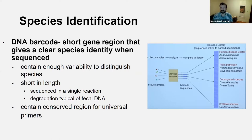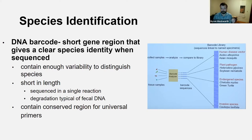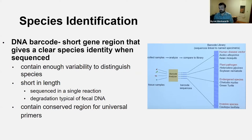Species ID — covered briefly before — is essentially DNA barcoding, where very short gene regions are used to identify species. There are global initiatives for standardized protocols for DNA barcoding methodology to describe the world's biodiversity, and we're borrowing from those approaches for our non-invasive collections. The key is that there's enough variability within the sequence to distinguish between species, but it's also typically short in length — one PCR run — because fecal DNA is low quality and low quantity.